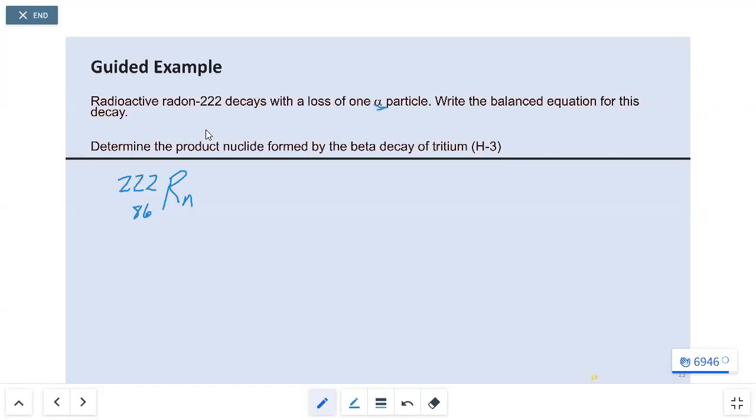Now this is an alpha decay. An alpha decay is going to produce an alpha particle, 4/2 alpha. All we have to do to balance this is remember that the mass numbers on top have to be even on both sides, and the atomic numbers on the bottom have to be even on both sides as well.